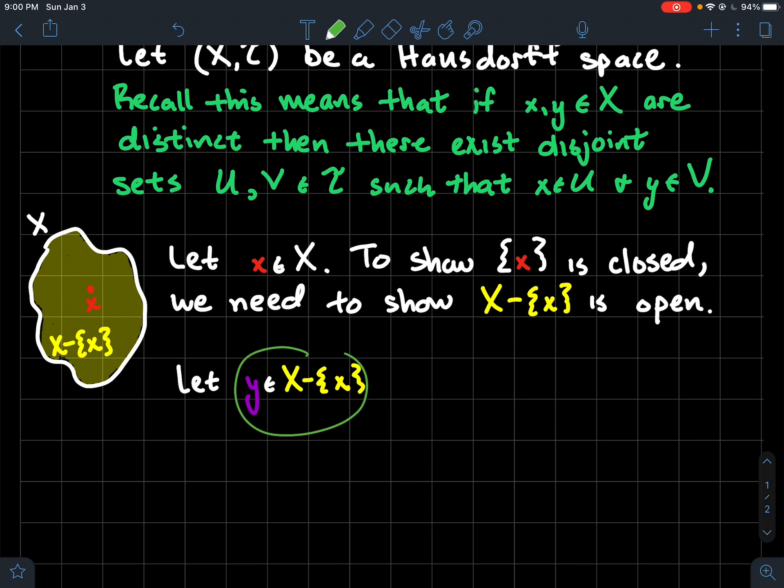So let's let y be any element of the yellow, any element of the complement of {x}. So in particular if y is in X but not equal to x that just means y is distinct from x.